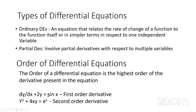Essentially, a first-order derivative means this is the simplest form the equation can exist in — you cannot differentiate it further. For example, if you have y = 2x² + 4x and differentiate it, you get 4x + 4, because you multiply the coefficient by the power and reduce the exponent.